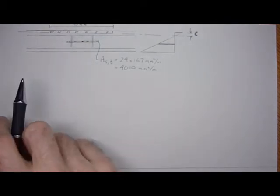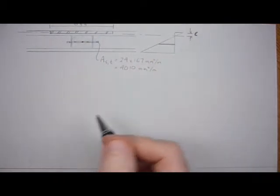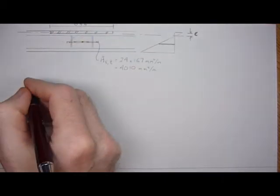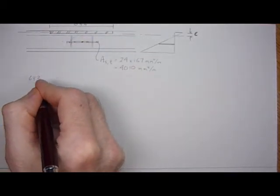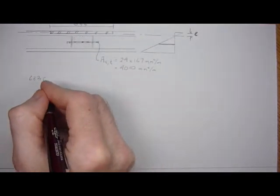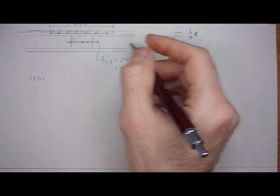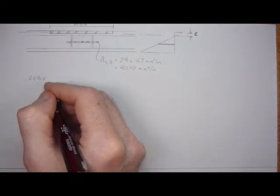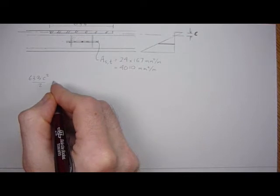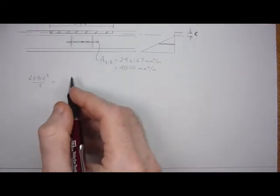So to find out the neutral axis location C, we take static moments. And we have the width 633 of the masonry face shell effective times some distance C, and then times C over 2. So that's C squared over 2 has to equal the transformed area of steel.